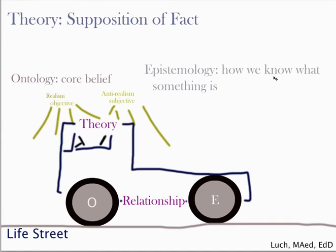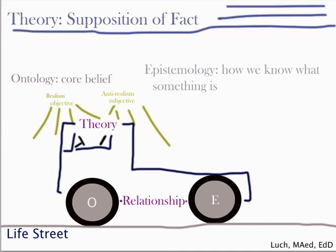From that theory, we generate further questions — hypotheses — which become research questions. When enough people in the field, usually the majority, believe something is theory or fact that is provable and measurable, we have a paradigm. A paradigm is an idea that a consensus holds.